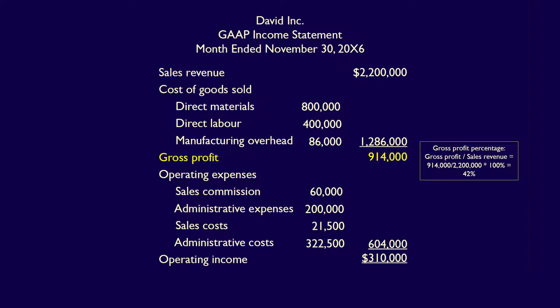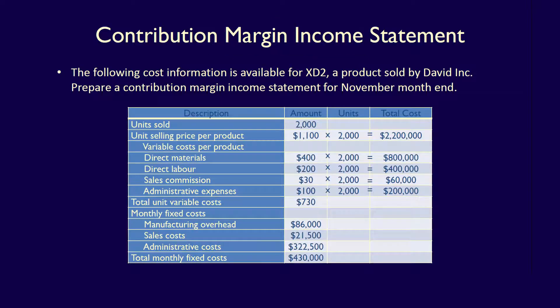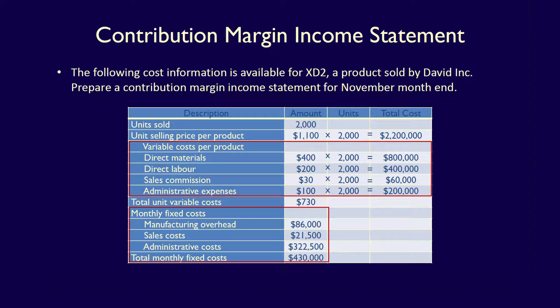Note that the gross profit percentage is identical if calculated on a per unit basis. This is a GAAP income statement, as covered in introductory financial accounting. Now, how does a contribution margin income statement differ from a GAAP income statement? We're going to use the same David Inc. information to prepare a contribution margin income statement — also called a CVP income statement. The contribution margin income statement groups costs into variable and fixed costs in order to calculate contribution margin.